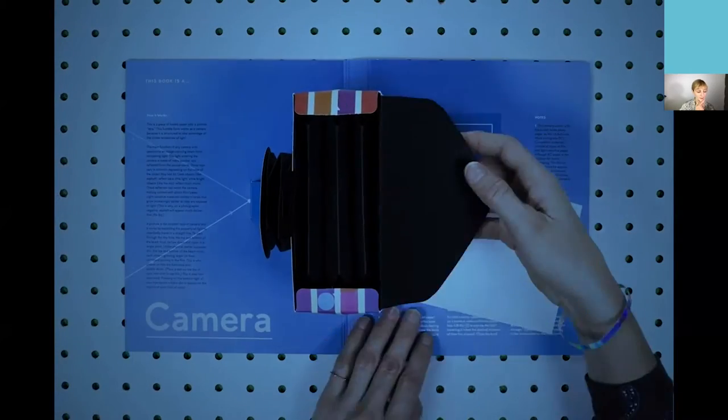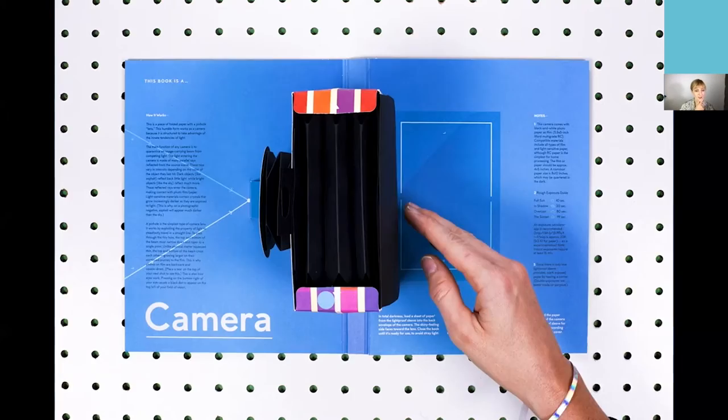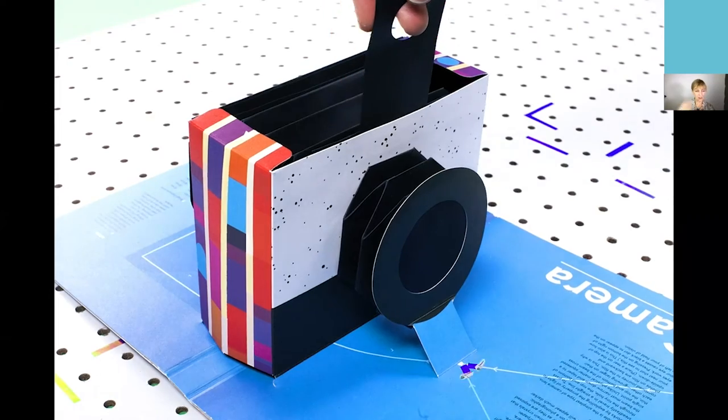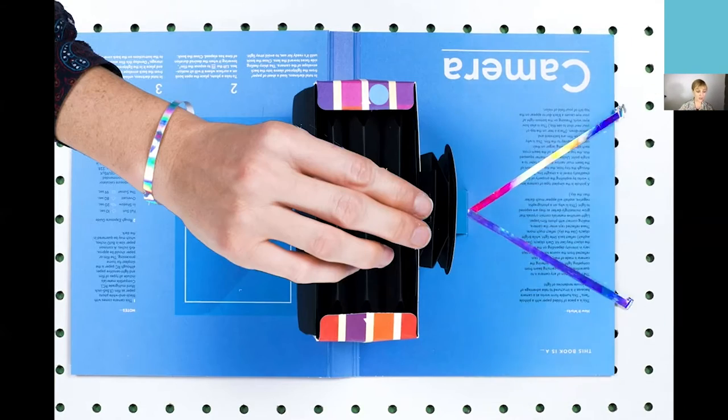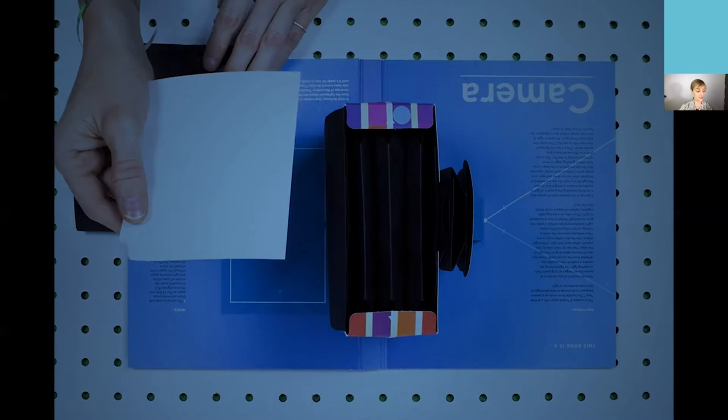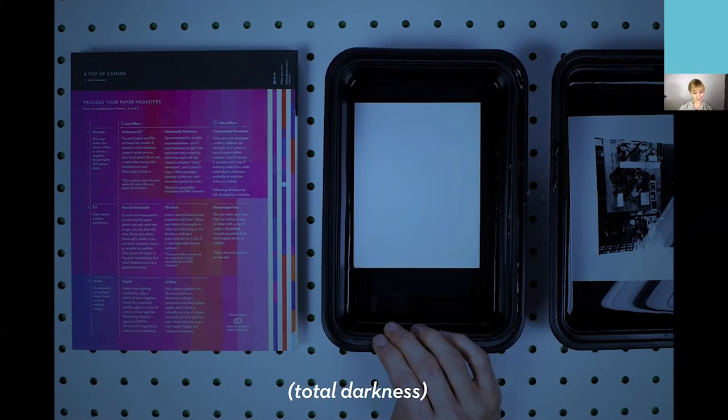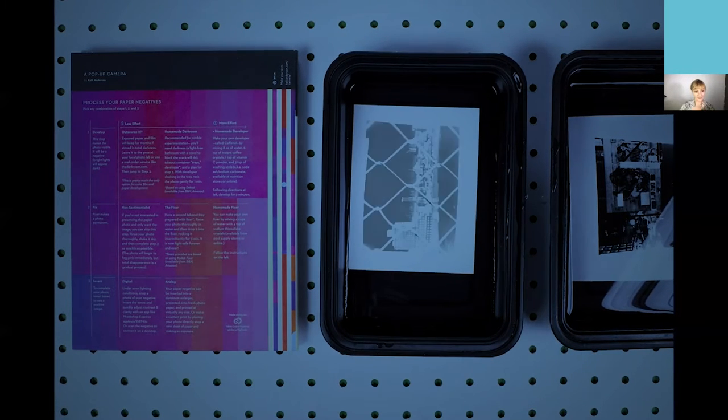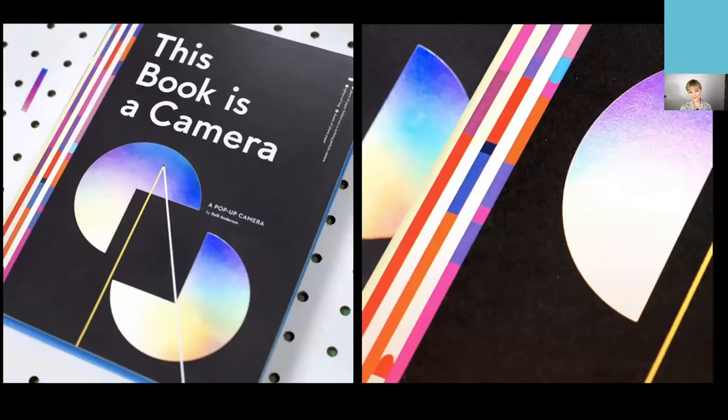For example, this is turning a piece of paper, a material that's traditionally considered non-technological, and folding it so that it can replicate the function of a more complex technology of a camera. This book is called This Book is a Camera, and it is a working camera and a book too. I'm the master of literal book titles.